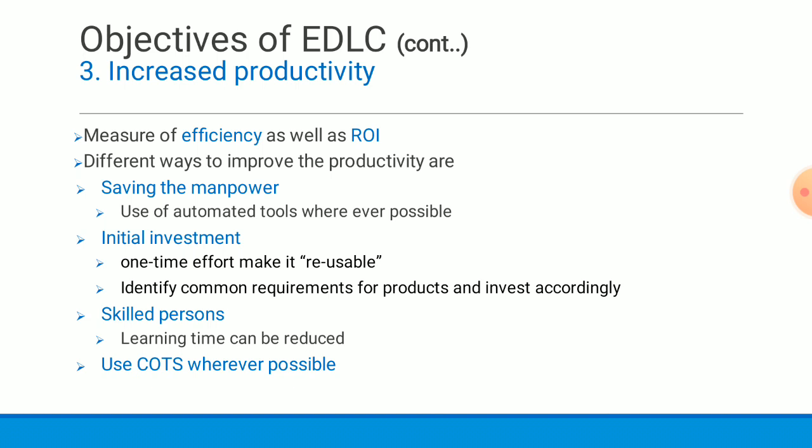Another method for increasing productivity is using resources with specific skill sets matching the exact requirement of the product, reducing the learning time for resources without prior expertise in the field. The fourth way is using commercial off-the-shelf components wherever possible, which greatly reduces development effort and increases productivity.